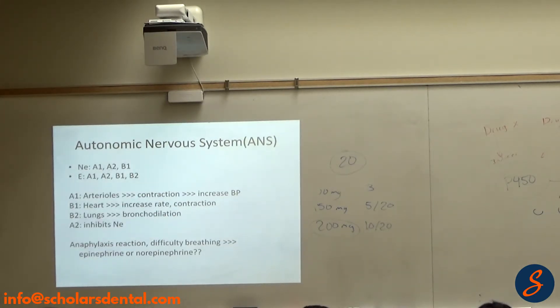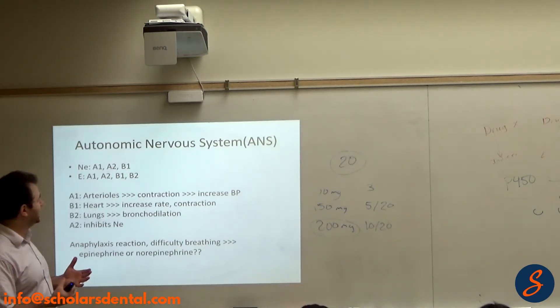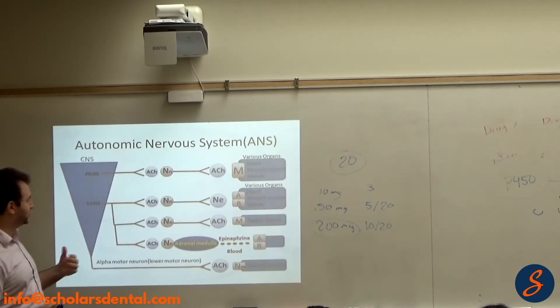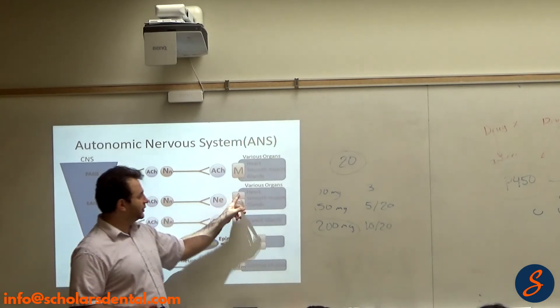From that, we concluded that norepinephrine stimulates alpha 1, alpha 2, beta 1. Epinephrine stimulates all four adrenergic receptors. So adrenergic receptors are four: alpha 1, alpha 2, beta 1, and beta 2.